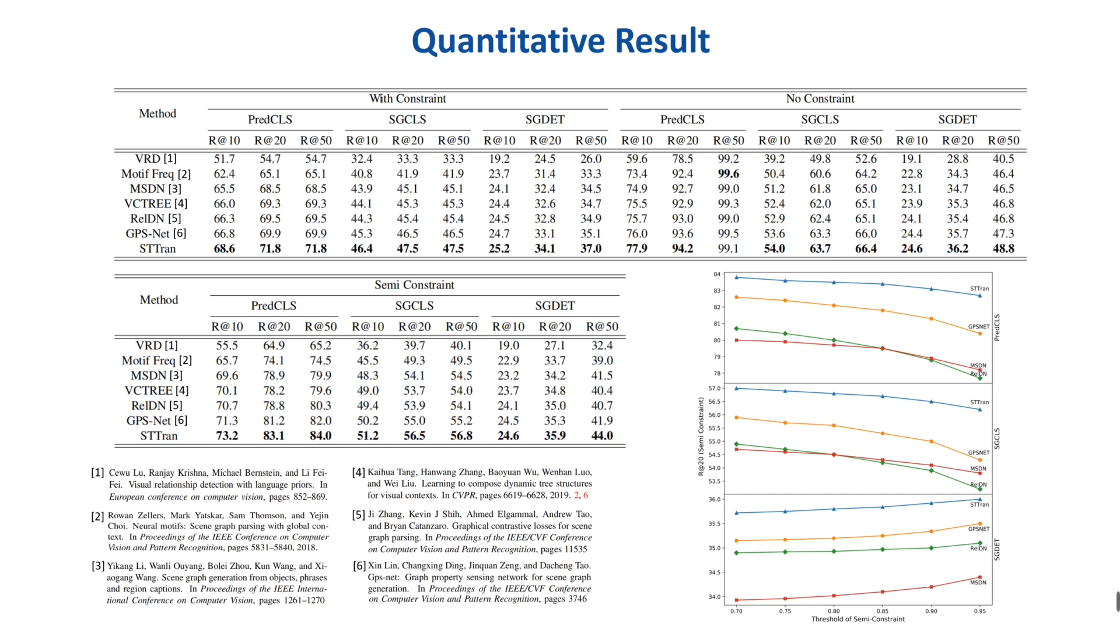In order to study the impact of such thresholds in semi-constraint, we evaluate GPS-Net, MSDN, RelDN, and our method with different thresholds of semi-constraint. STTran consistently outperforms the others at all threshold levels.